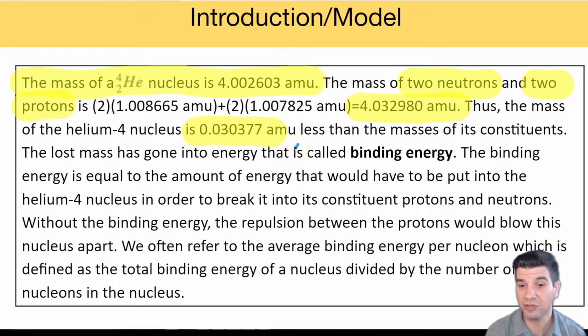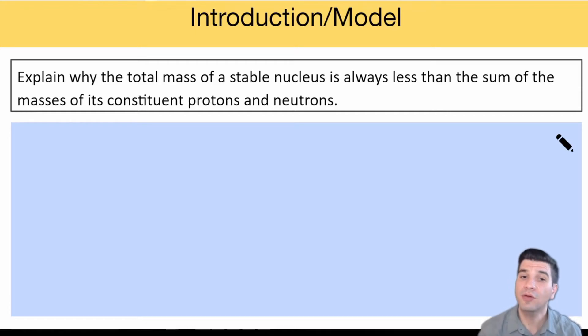This mass has gone into energy called binding energy, and that binding energy is equal to the amount of energy that would have to be put into the helium-4 to break it back down into those constituent parts. So explain why the total mass of a stable nucleus will always be less than the sum of the masses of its constituent parts.